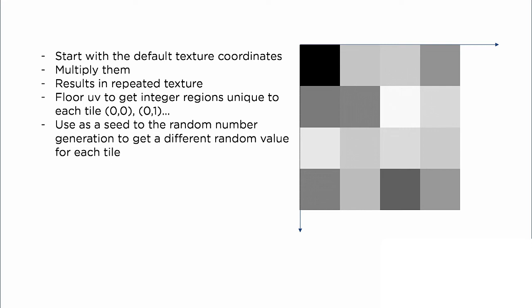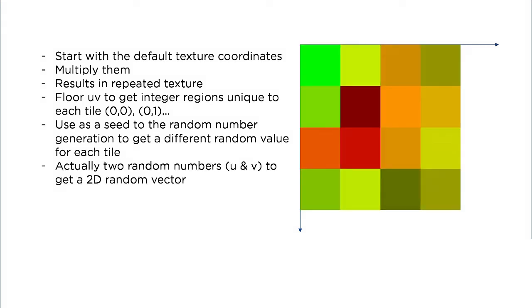Then, if we do that twice to get another set of random values, we can create random 2D offsets for each tile. So if you go back to the tiling UVs,